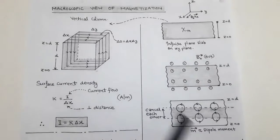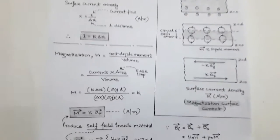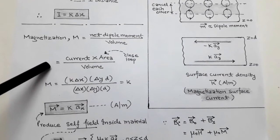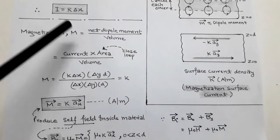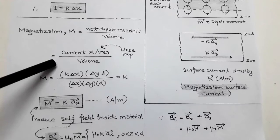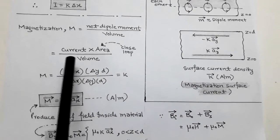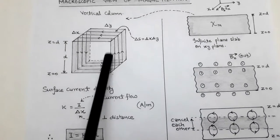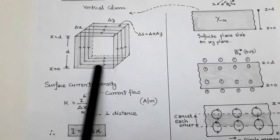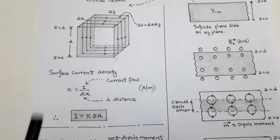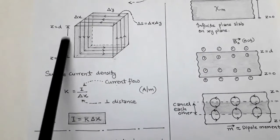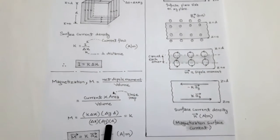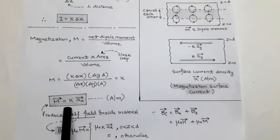Since the magnetic material placed in an external magnetic field gets magnetized, we need to find the magnetization. The formula for magnetization M is net dipole moment per unit volume. The net dipole moment equals current times area, where the area is the area of the closed loop. The current is k times delta x, and the area of the closed loop is delta y times d. The volume of the vertical column is delta x times delta y times d. After cancellation, we get magnetization M equals surface current density k.